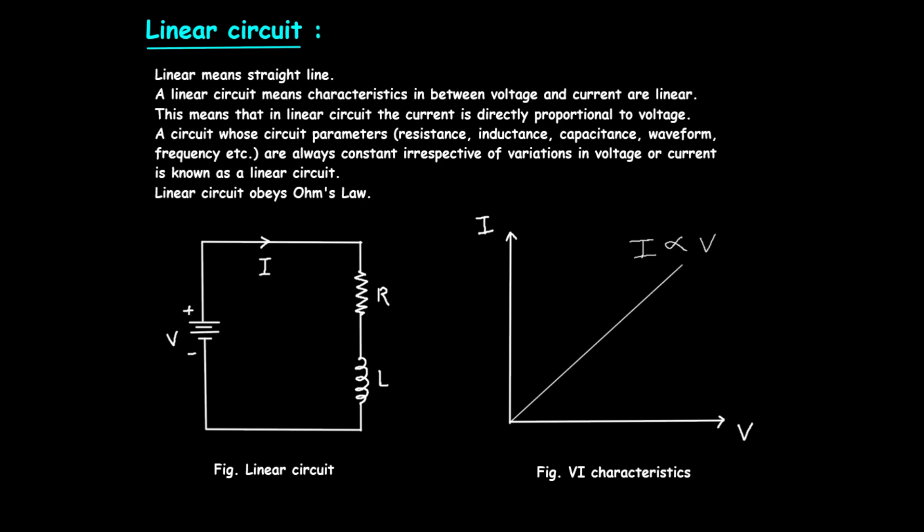Understanding linear circuits is crucial for designing and analyzing many electrical systems. Here are a couple of practical applications. 1. Amplifiers: Linear circuits are used in amplifiers to ensure that the output signal is a proportionally increased version of the input signal. This is important in audio and communication systems where signal integrity is critical. 2. Signal Processing: In signal processing, linear circuits help maintain the accuracy and quality of signals, ensuring precise reproduction and amplification.